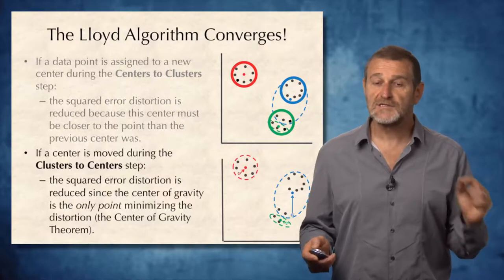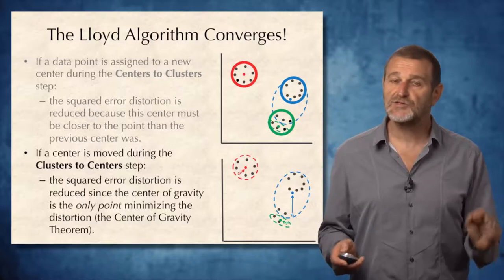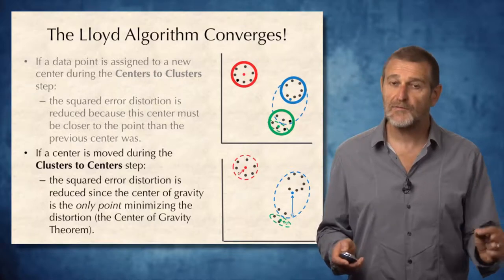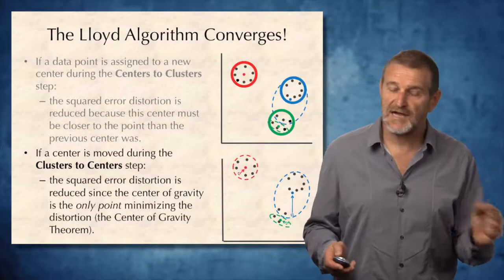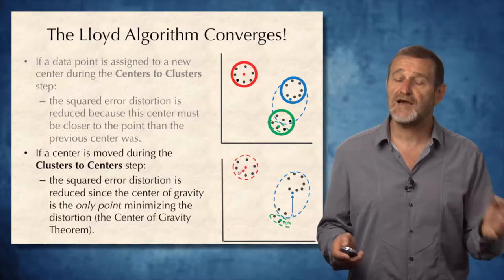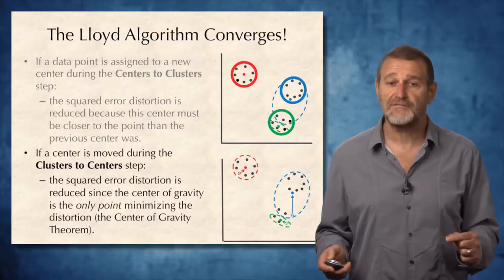Therefore, the Lloyd Algorithm converges, but it unfortunately can converge to local minimum rather than global minimum. And that's why it is customary to run the Lloyd Algorithm many times starting from different centers. It also may take quite a long time to converge.